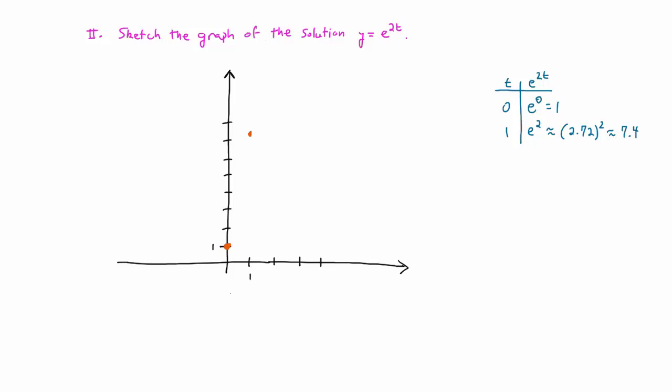Since this is just a transformed version of the graph of e to the t, the graph should look roughly like that, and this matches what we expect from the slope field for the differential equation, which we made in a previous video.